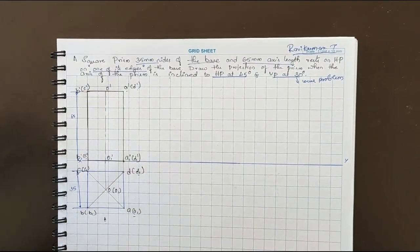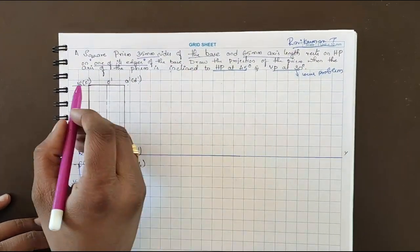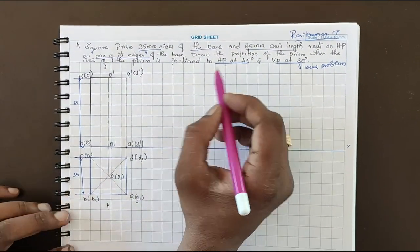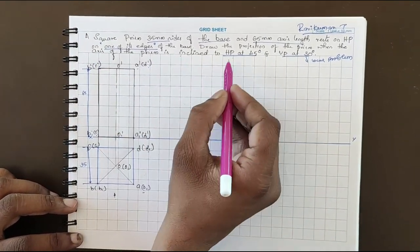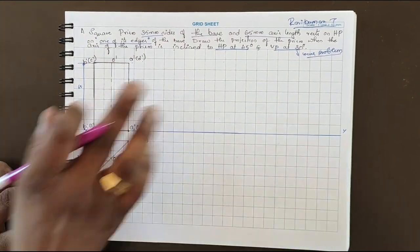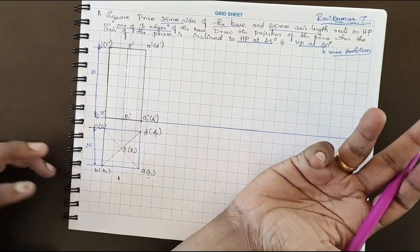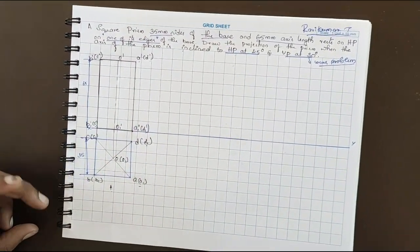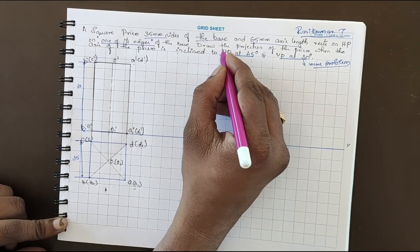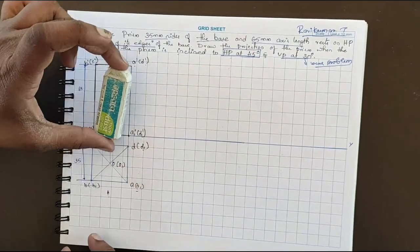For the second position, draw the projection of the prism when the axis is inclined to both HP and VP. As I told in the previous video, if the axis is inclined to both HP and VP, it is a locus problem. If the word 'apparent' is present, it is a without-locus problem. Here it's a locus problem. The second position has the axis inclined to HP at 45 degrees.